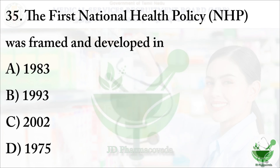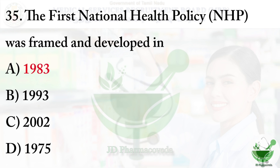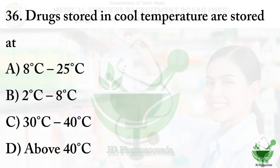Question number 35: The first national health policy was framed and developed in — option A 1983, option B 1993, option C 2002, and option D 1975. The correct option is option A, 1983.